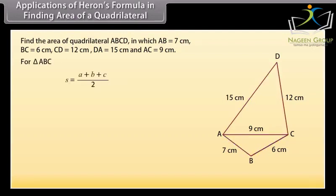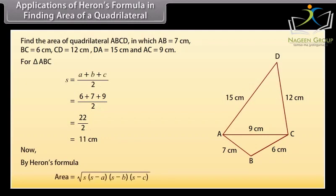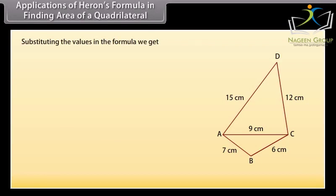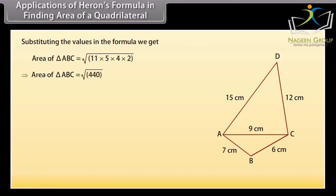For triangle ABC, S = (A + B + C) / 2 = (6 + 7 + 9) / 2 = 22 / 2 = 11 cm. By Heron's formula, area = √(S × (S−A) × (S−B) × (S−C)) = √(11 × 5 × 4 × 2) = √440 ≈ 20.9 cm².